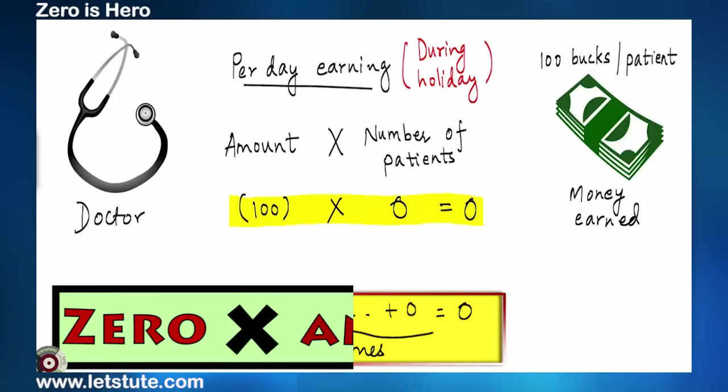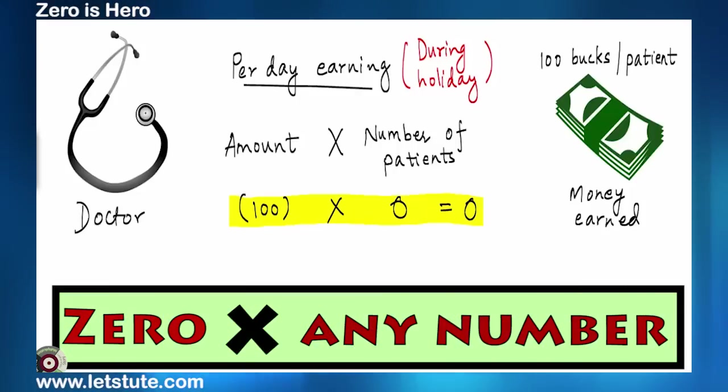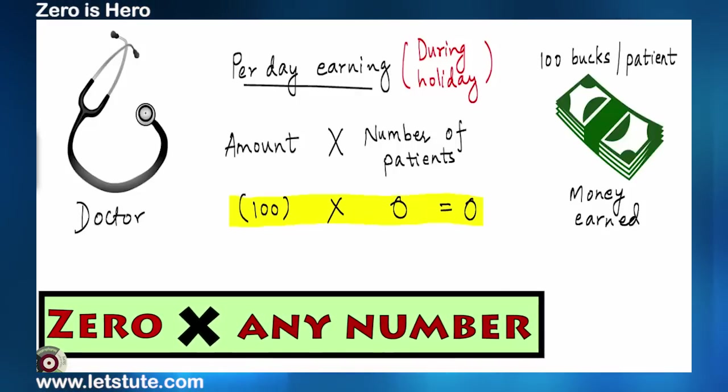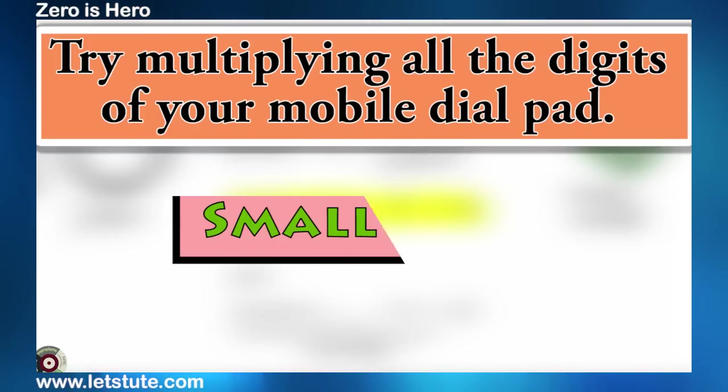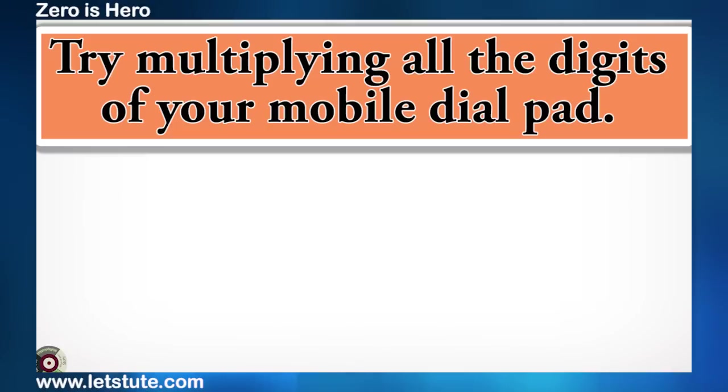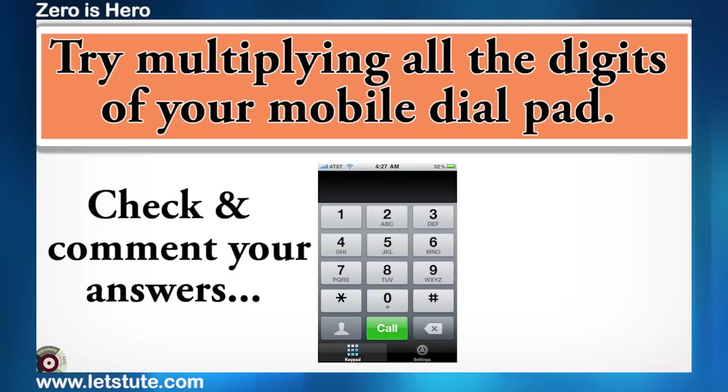And therefore, we say that when zero is multiplied by a number, it reduces its value to zero. Now, a small task for you. Try multiplying all the digits of your mobile dial pad. Check and tell us your answers by posting your comments.